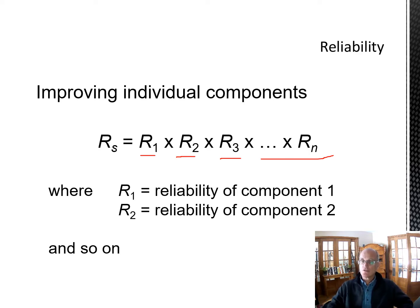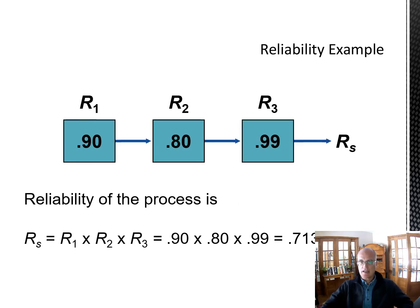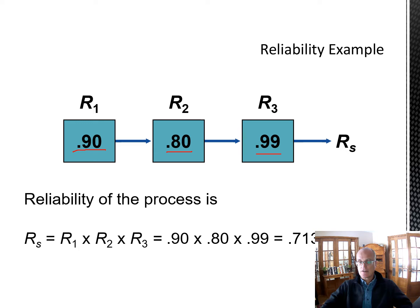Reliability decreases rapidly with more components in the system. For example, if you have 0.9, 0.8, and 0.99 — all of those individually look pretty good — but because you multiply the probability of each not failing together, you get 0.731. So even though these look relatively good, the probability that the system works throughout is only 0.713.